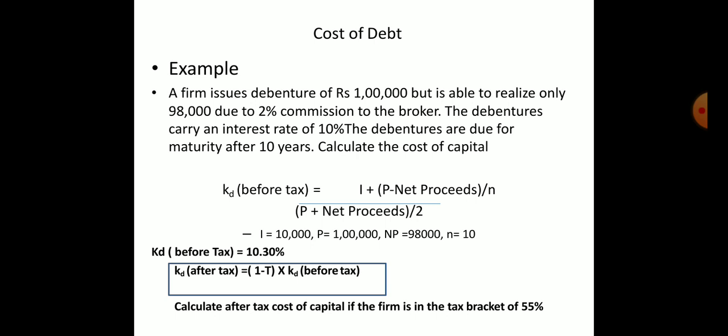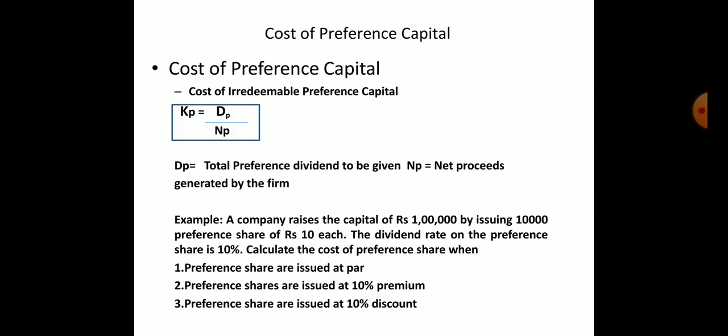The cost of preference capital is almost the same as cost of debt. Kp = Dp / NP, where Dp is preference dividend and NP is net proceeds. There is no concept of before and after tax for preference shares because interest is tax deductible, but preference dividend is not — it is always paid from profit only.